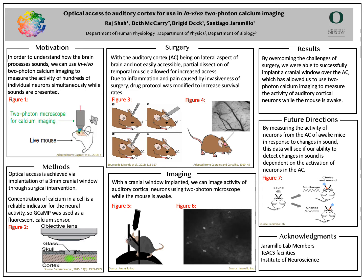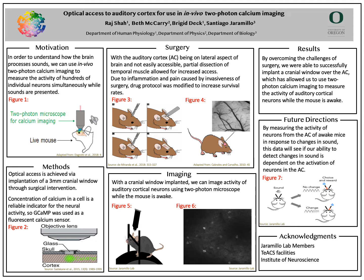Future directions. We want to measure the activity of neurons in the auditory cortex while the mouse is being presented with changes in sound. In figure seven, when we create a task that involves a mouse processing changes in sound, we can use data from the calcium imaging to see if our ability to detect changes in sound is dependent on the activation of neurons in the auditory cortex. This will better allow us to understand how the brain processes sounds.